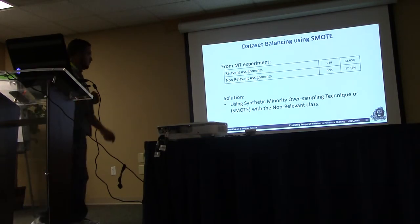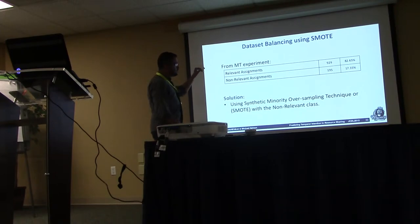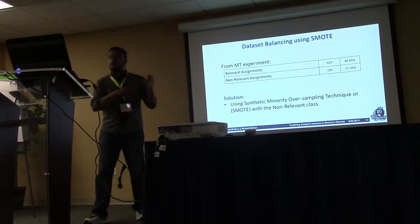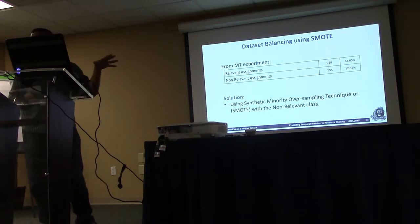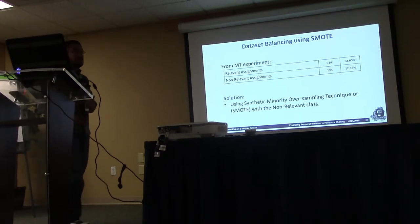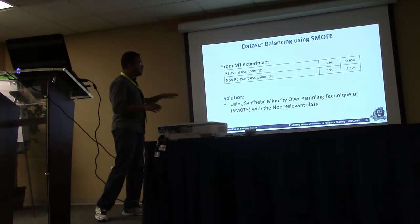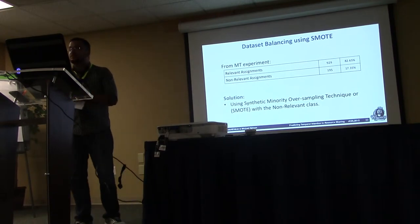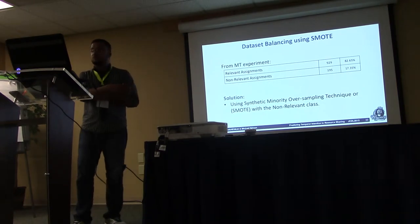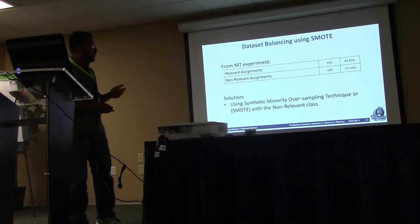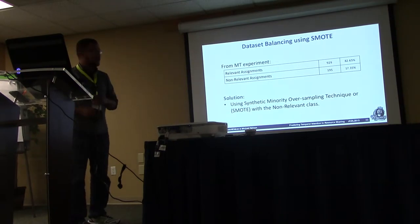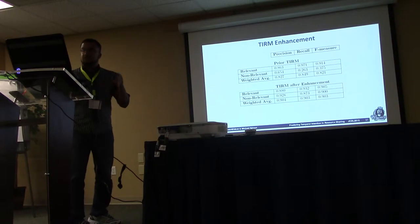From the prior Mechanical Turk experiment, we got relevant and non-relevant classes, but our classifier was inherently biased — 80 to 20 divide towards the relevant class, which is very biased. To balance the dataset between the two classes, we could either slash the relevant assignments down to 20 percent or increase the non-relevant assignments. We did the latter by oversampling using the SMOTE — Synthetic Minority Oversampling Technique — to increase and balance the dataset.